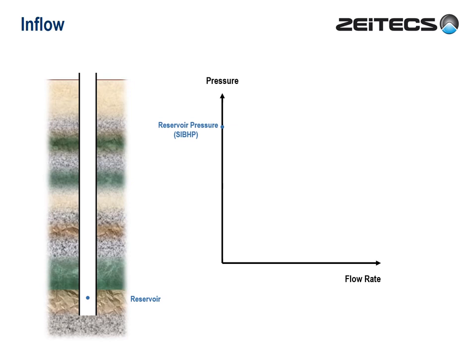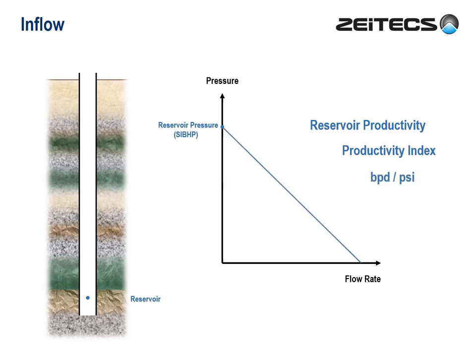The first concept I'd like to introduce is reservoir productivity, or more specifically, productivity index, measured in barrels per day per psi. This is how it works. If we draw down — that is, lower the pressure at our imaginary point — then fluids will flow to that point at a specific rate. We then have a flowing bottom-hole pressure at that point.